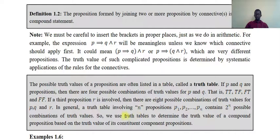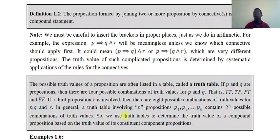In general, a truth table involving n propositions p1, p2, ..., pn has 2 to the power of n possible combinations of truth values. I'm going to show you now that there are 2^n possible combinations.